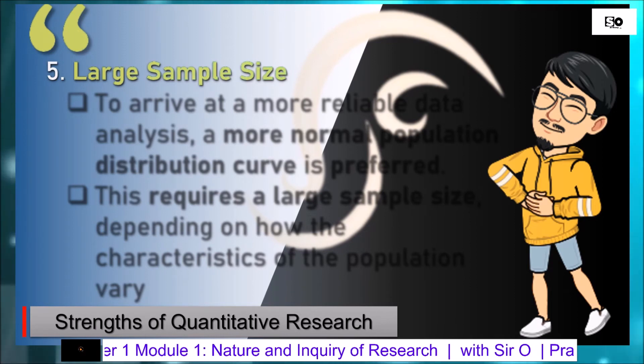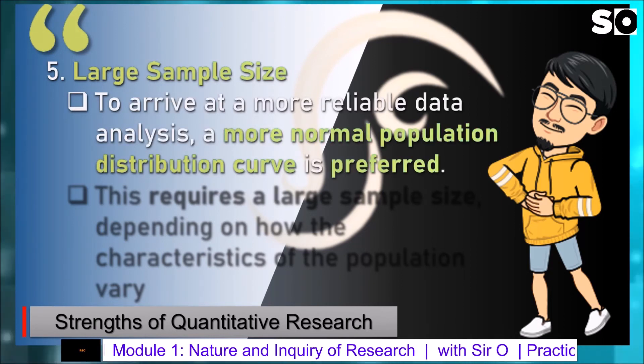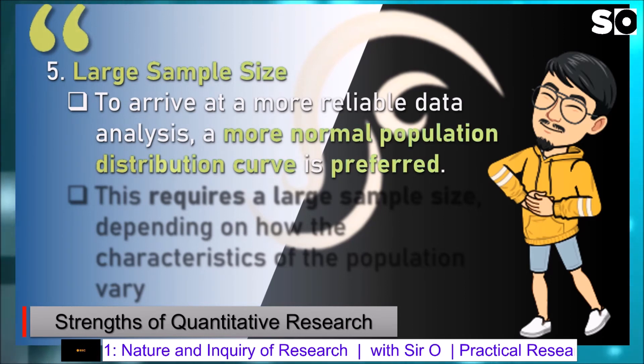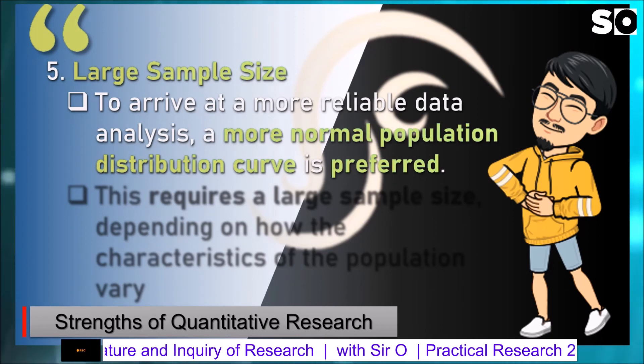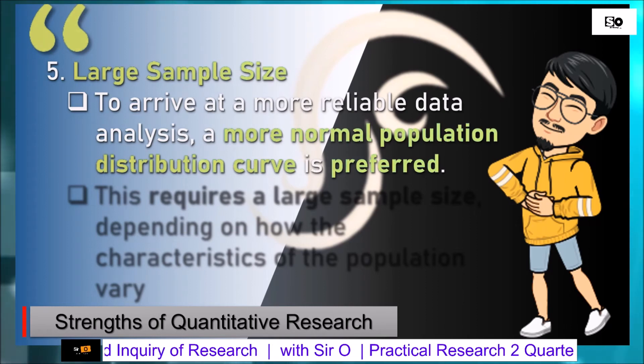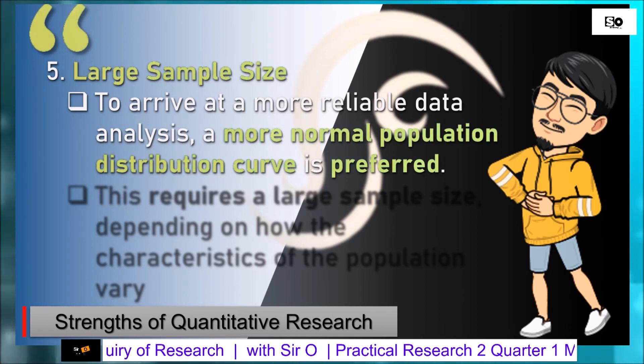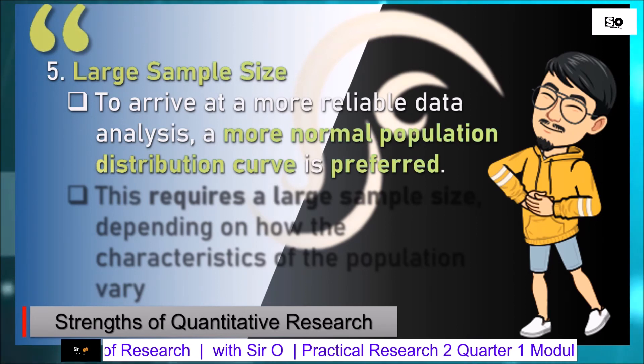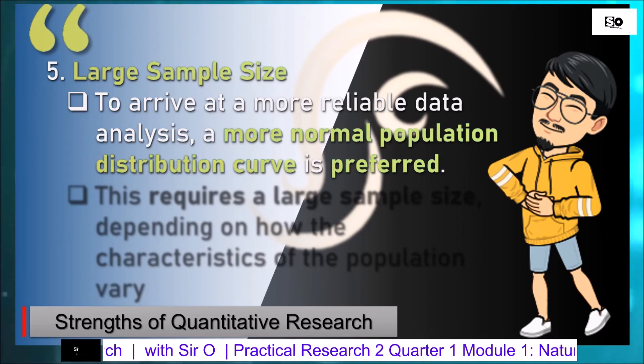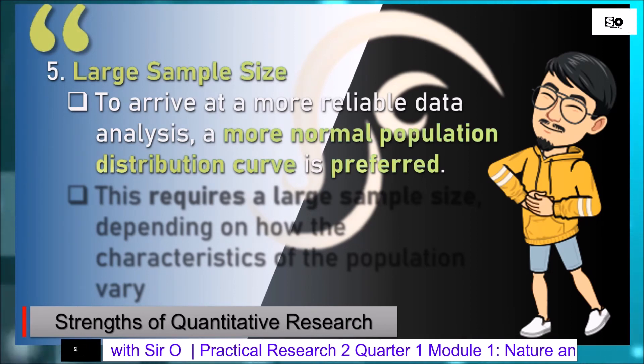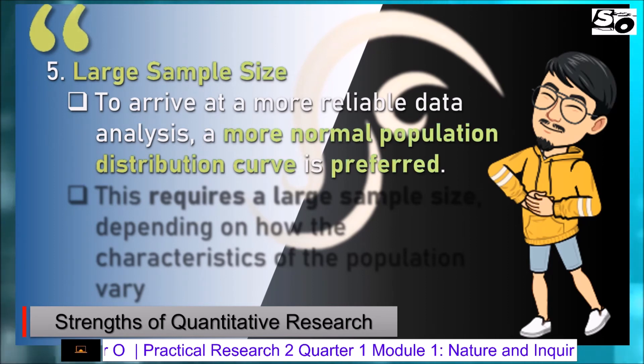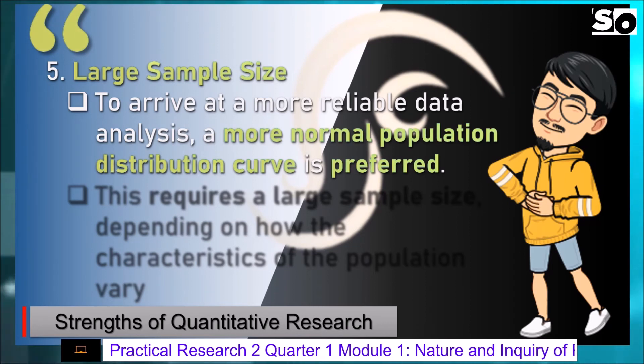Panghuli, Large Sample Size. To arrive at a more reliable data analysis, a more normal population distribution curve is preferred. This requires a large sample depending on how the characteristic of the population vary. Lagi ninyong tatandaan na habang dumarami ang participants or respondents na sasagot sa ating survey questionnaire ay mas magiging malaki ang chance na makakuha tayo ng magandang resulta dahil nga mas maraming respondents, mas malaki ang porsyento ng mga tao ang maaari nilang i-represent sa isang institusyon.